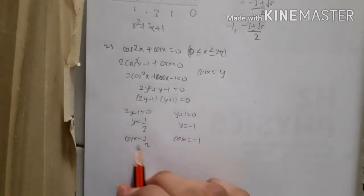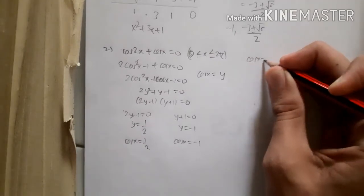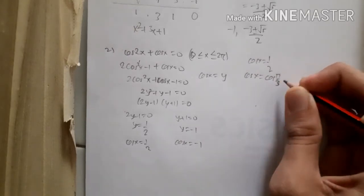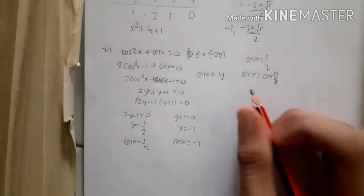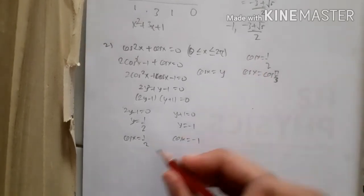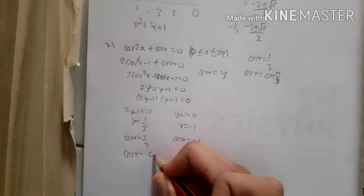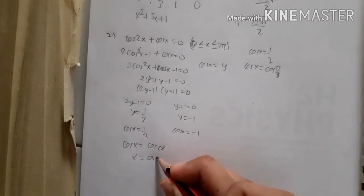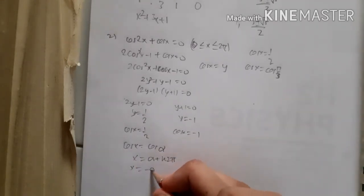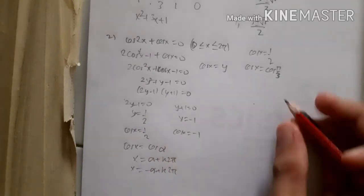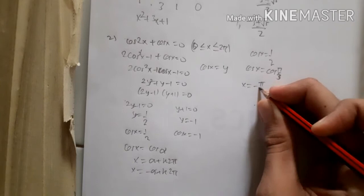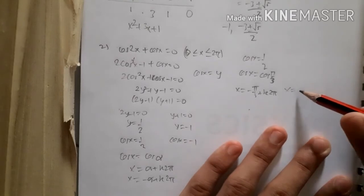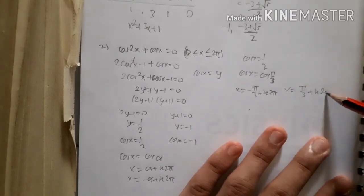The angle that makes cos x = 1/2 is π/3 (60°). Using the general cosine solution — if cos x = cos α, then x = α + 2kπ or x = −α + 2kπ — we get x = π/3 + 2kπ and x = −π/3 + 2kπ.